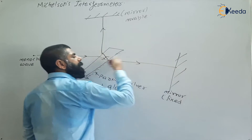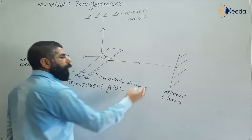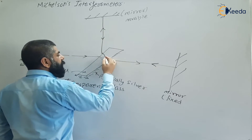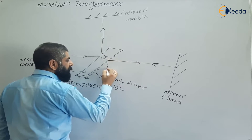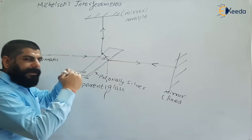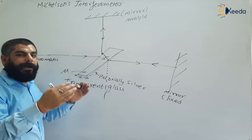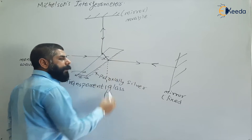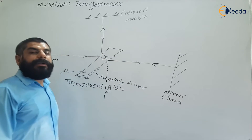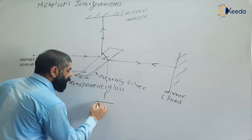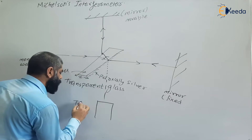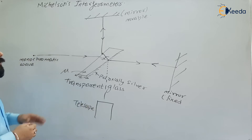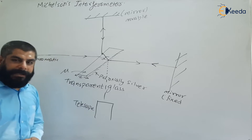When light strikes each mirror, it is reflected back. The two reflected waves then superimpose on each other, giving rise to the phenomenon called interference, which is observed through a telescope. This is the basic diagram of the Michelson interferometer.